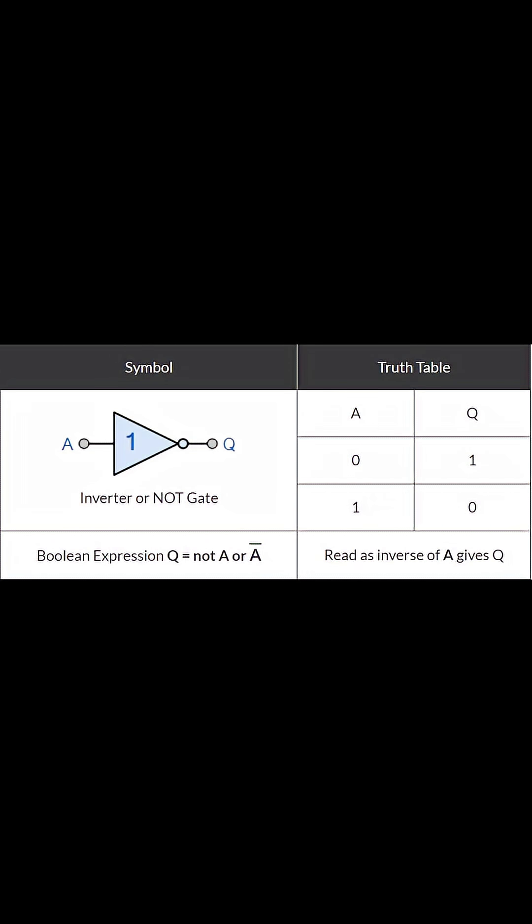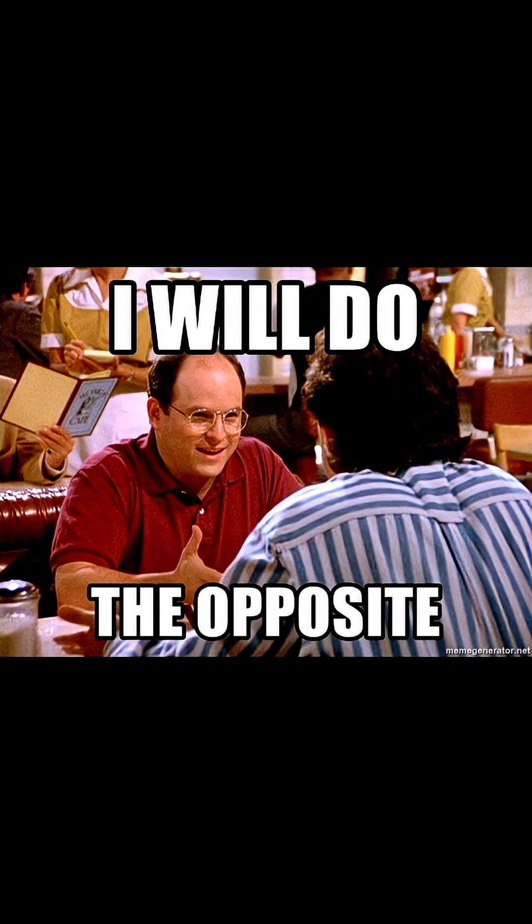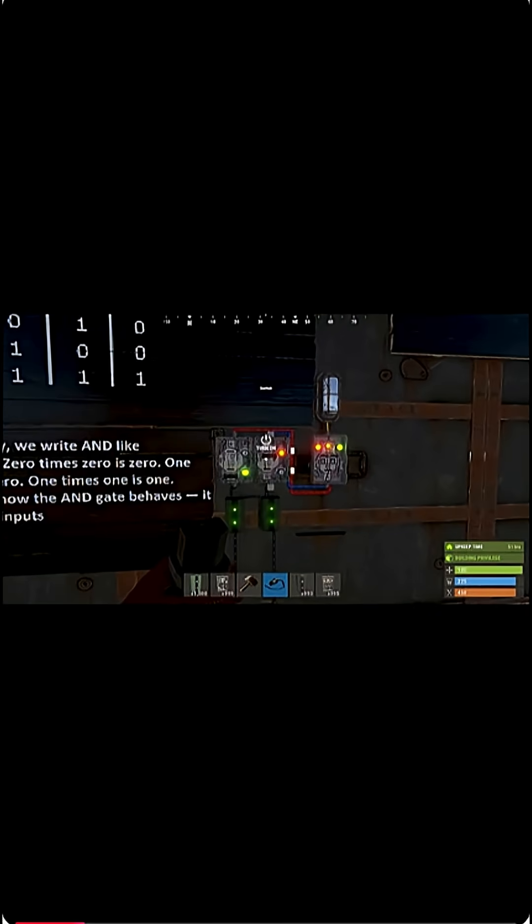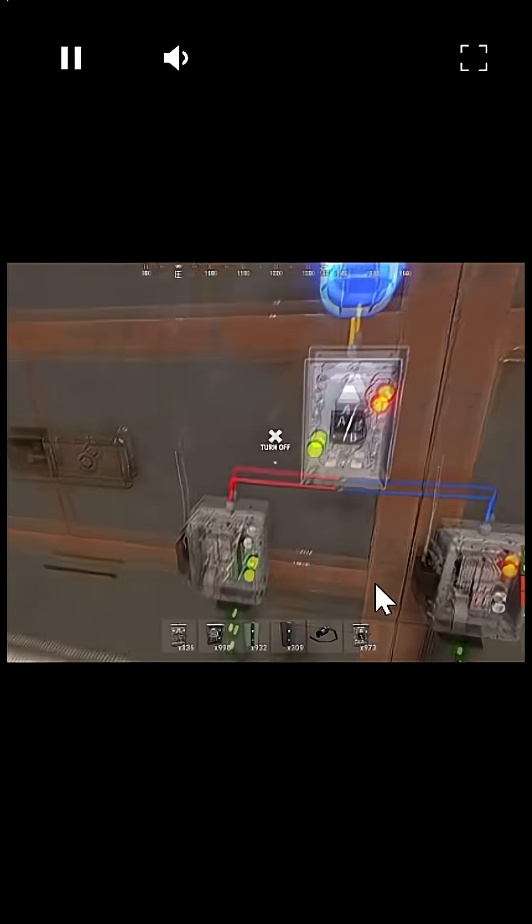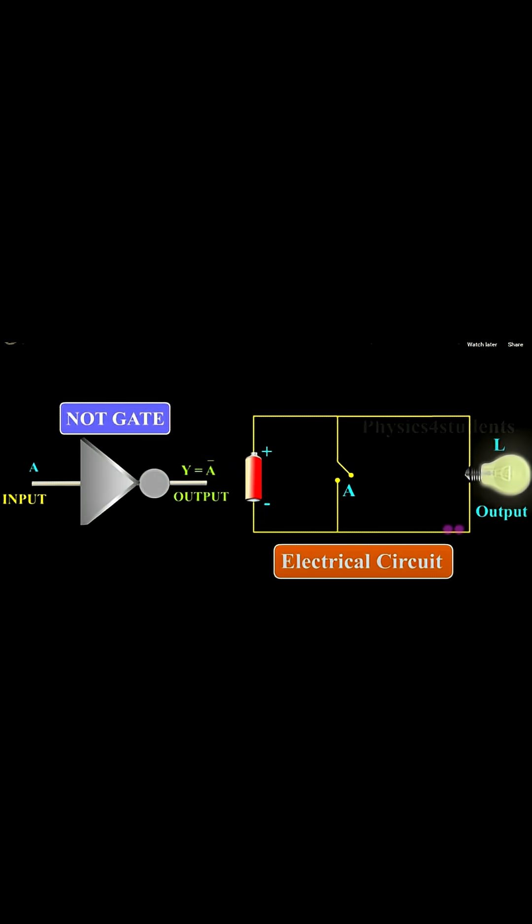The NOT gate is the only gate that produces the opposite of whatever it receives. While AND and OR determine what happens when conditions are true, NOT introduces the ability to react to what is NOT happening. This is what transforms basic wiring into conditional control logic.